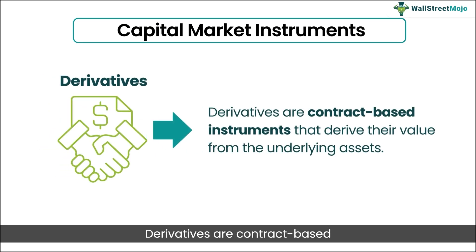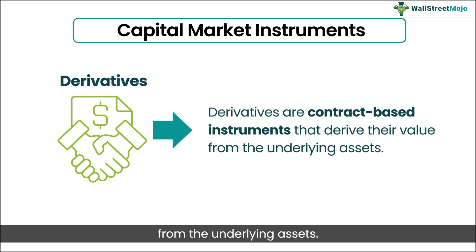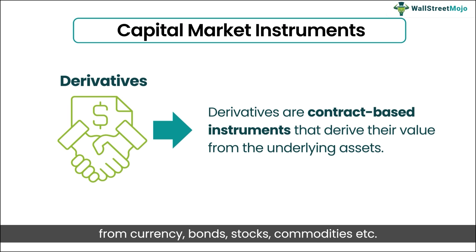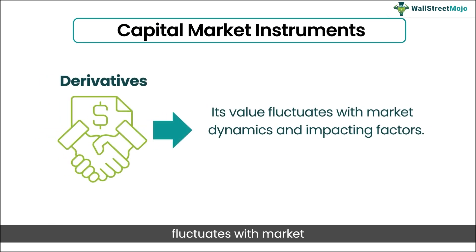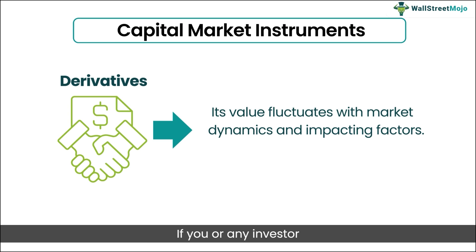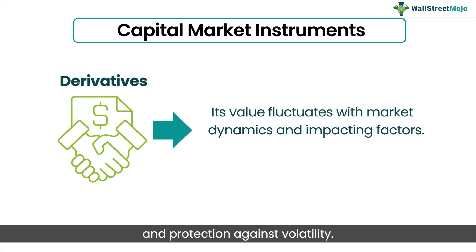The next ones on the list are derivatives. Derivatives are contract-based instruments that derive their value from the underlying assets. These assets can be anything from currency, bonds, stocks, commodities, etc. Their value fluctuates with market dynamics and impacting factors. If you or any investor is investing in derivatives, it could be majorly because of price speculation, prediction, and protection against volatility. That's how simple it is.